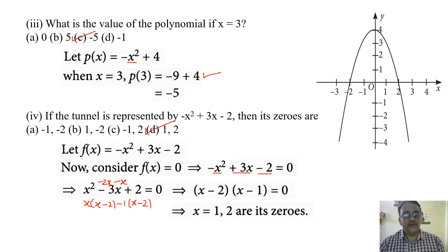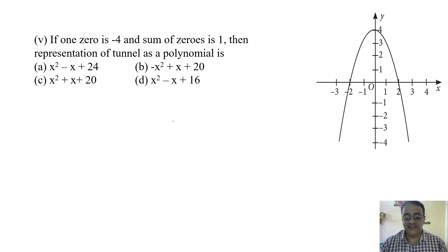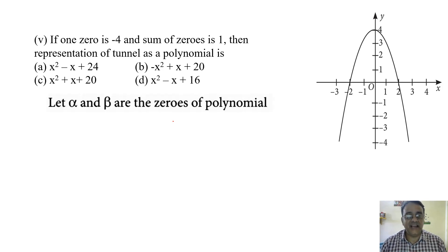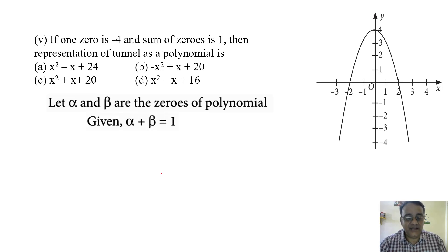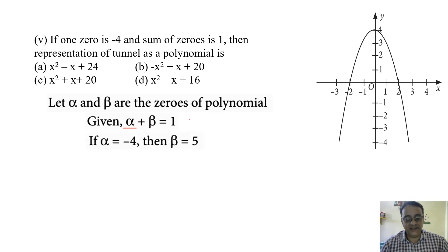If one zero is minus 4 and the sum of zeros is 1, the representation of the tunnel as a polynomial is: let the two zeros be alpha and beta. Taking alpha as minus 4: minus 4 plus beta equals 1. Shifting minus 4 to the other side gives beta equals 1 plus 4, which is 5.